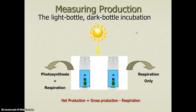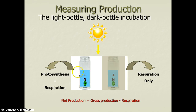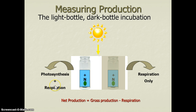One classical method is the light bottle and dark bottle incubation. We take phytoplankton and place them in two bottles with similar nutrients. One bottle is shaded so there's no light — without light there's no photosynthesis, but there is still respiration, so these organisms continue to burn energy without photosynthesizing. In the light bottle, they photosynthesize and also burn energy. By measuring something about both bottles and subtracting the dark bottle reading from the light bottle reading, we get gross primary productivity.